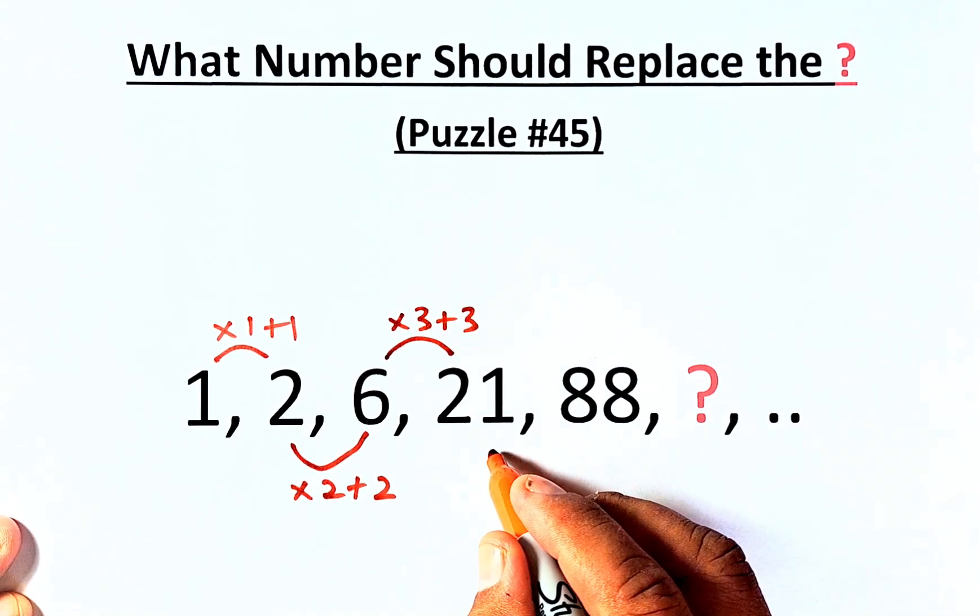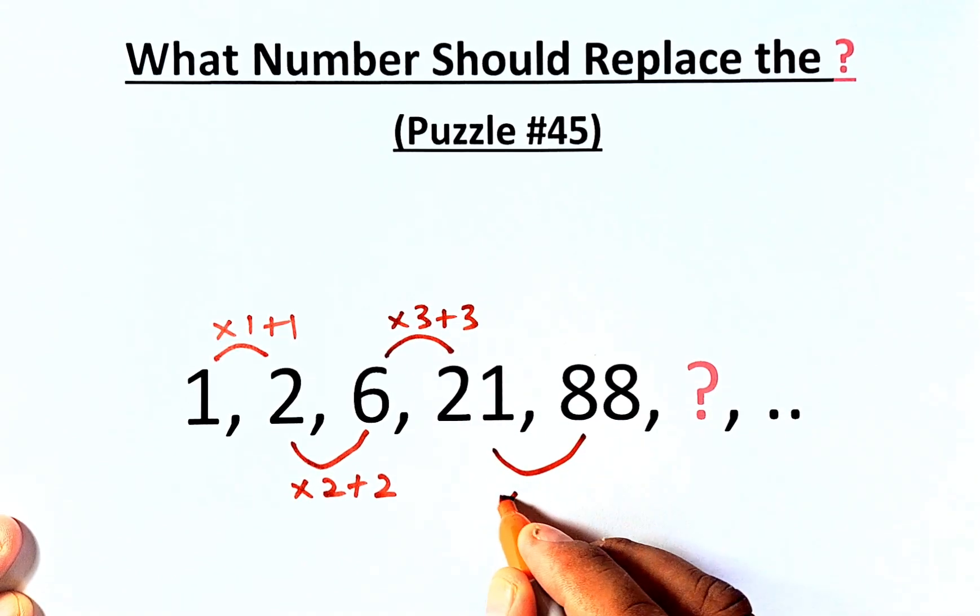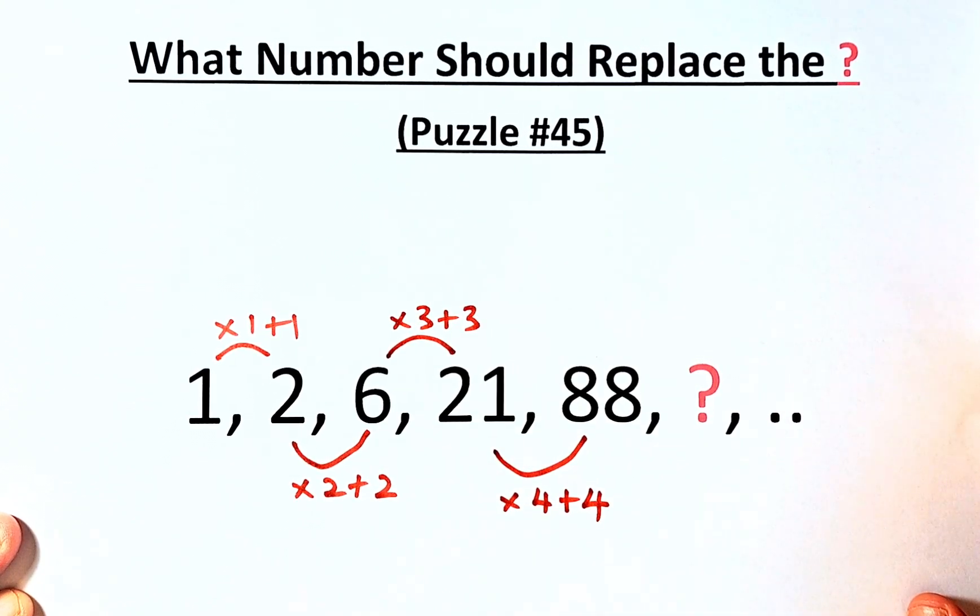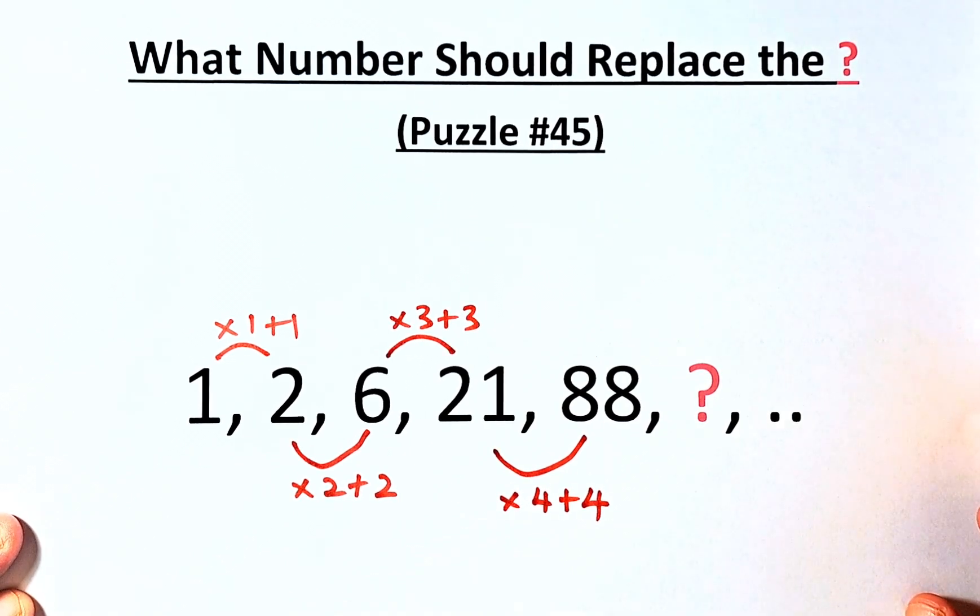And now from 21 to 88, you are going to multiply by 4 and add 4. 21 times 4 is 84. 84 plus 4 will give us 88.